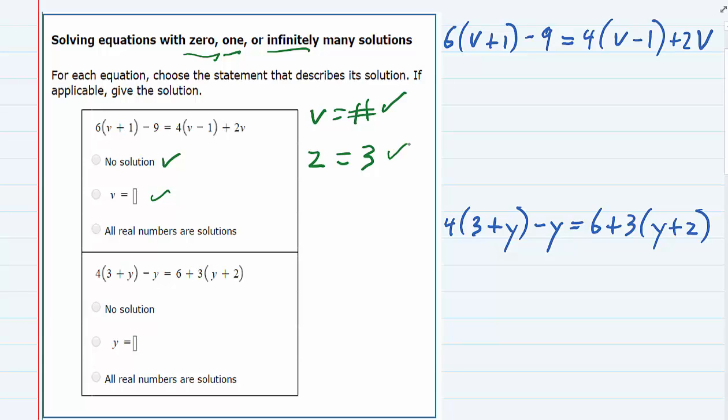The other possibility is maybe in solving the equation, we get a true statement, like four equals four. Again, the variable canceled out and we're left with just something that is true. Four equals four. That is always true.